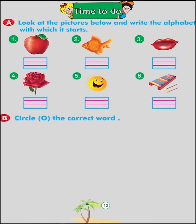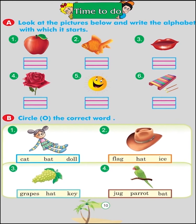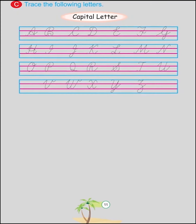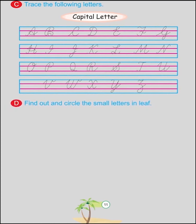Circle the correct word: D for Doll, H for Hat, G for Grapes, P for Parrot. Trace the following letters — Capital Letter. Find out and circle the small letters in the leaf.